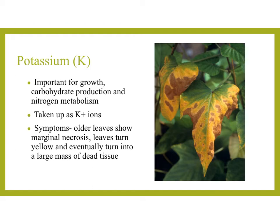Potassium is important for growth, carbohydrate production, and nitrogen metabolism. We use the element symbol K to represent potassium because P is already used for phosphorus. It's taken up as a K+ ion. The symptoms of deficiency include older leaves that show marginal necrosis — the leaves turn yellow and eventually turn into a large mass of dead tissue.